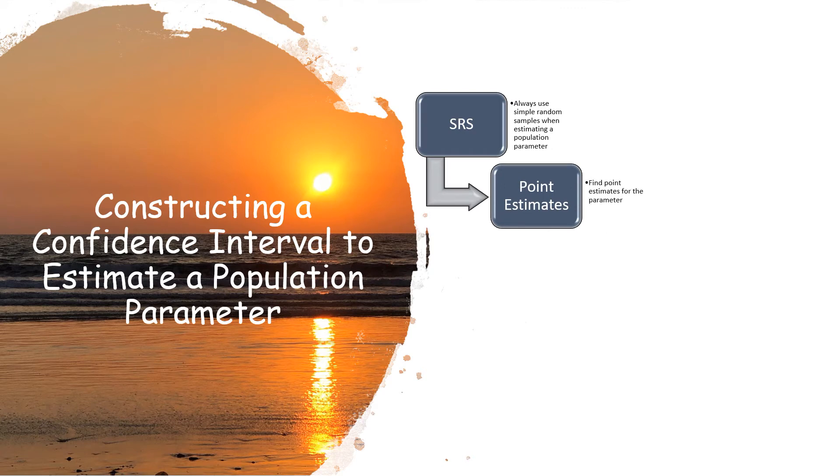Point estimates. So we've been finding point estimates. We just didn't call them that. p hat is the sample proportion. x bar is a sample mean. And s is the sample standard deviation, depending on what kind of confidence interval you're constructing.